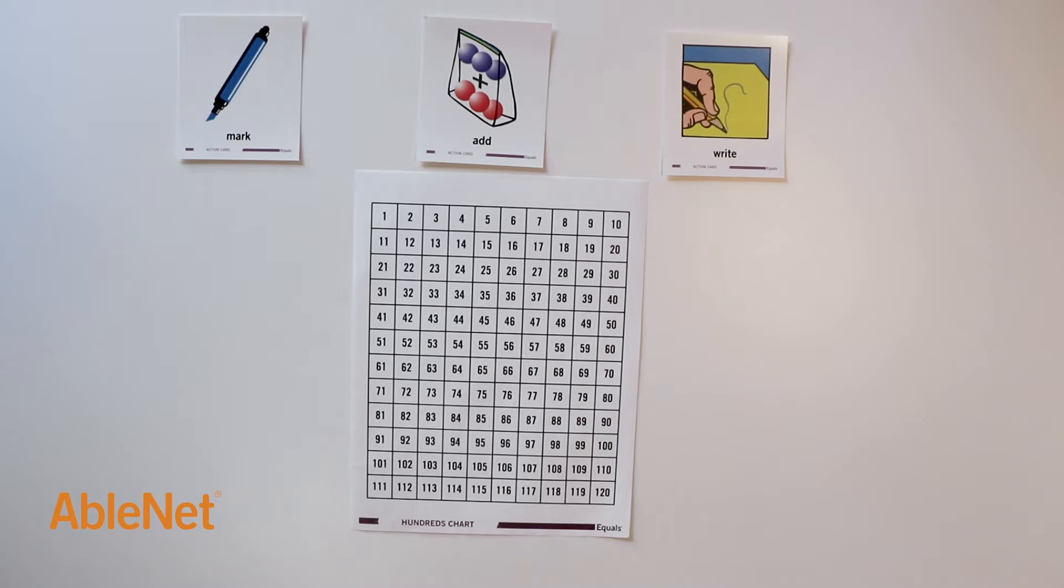The problem states, Lauren bought a bottle of water and trail maps for $23. She bought a pair of hiking shoes. The shoes cost $36 more than the water bottle and maps. How much did the hiking shoes cost?